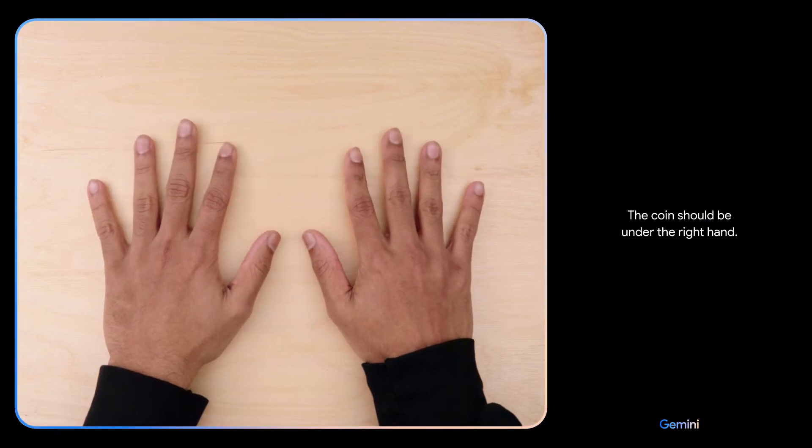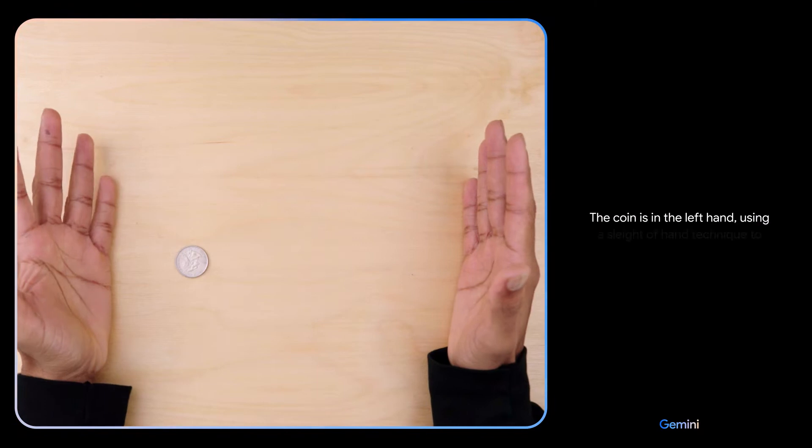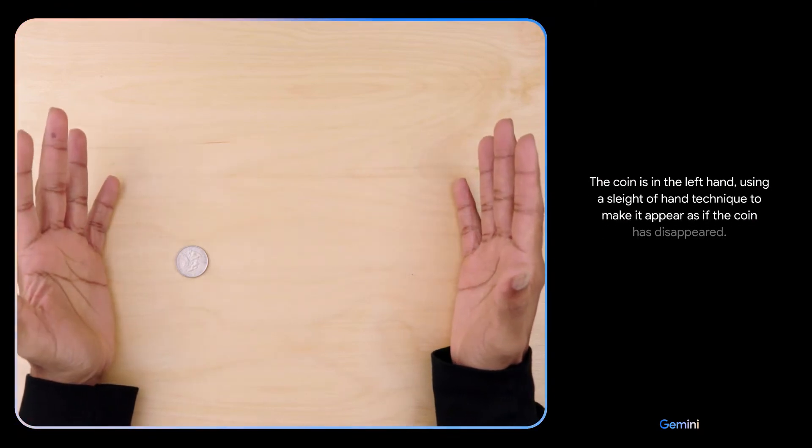The coin should be under the right hand. Hmm, I don't know. The coin is in the left hand using a sleight of hand technique to make it appear as if the coin has disappeared.